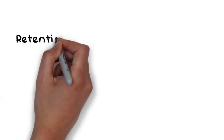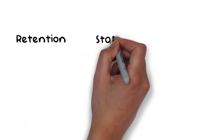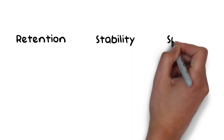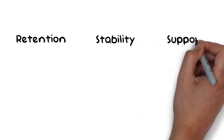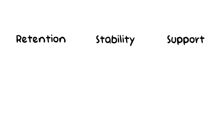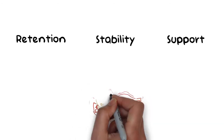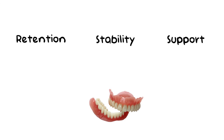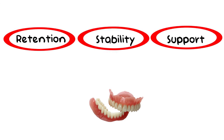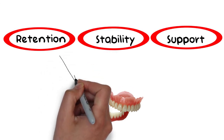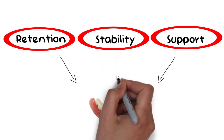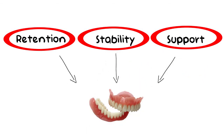As an ending note, retention is not to be confused with either stability or support. Retention is the quality of the denture that holds it in its place, while stability essentially makes the denture more stable in the patient's mouth. Stability and support will be discussed in the next videos, but all of these qualities are highly desirable and necessary for a denture to function effectively. Without even one of these qualities, the denture will not be much use to the patient, or it may even cause damage to the underlying tissues, giving rise to further problems.